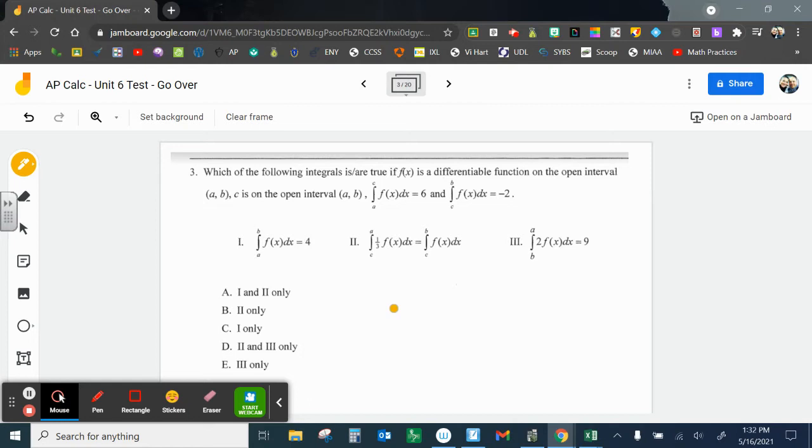Which of the following integrals is or are true if f(x) is a differentiable function on the open interval a to b, and c is on the open interval from a to b. So I know when I go from a to c, that equals 6, and from c to b, that equals negative 2. So if I'm going from a to b, that's just this one, a to c, 6, plus this one, c to b, negative 2. 6 plus negative 2, so this one works.